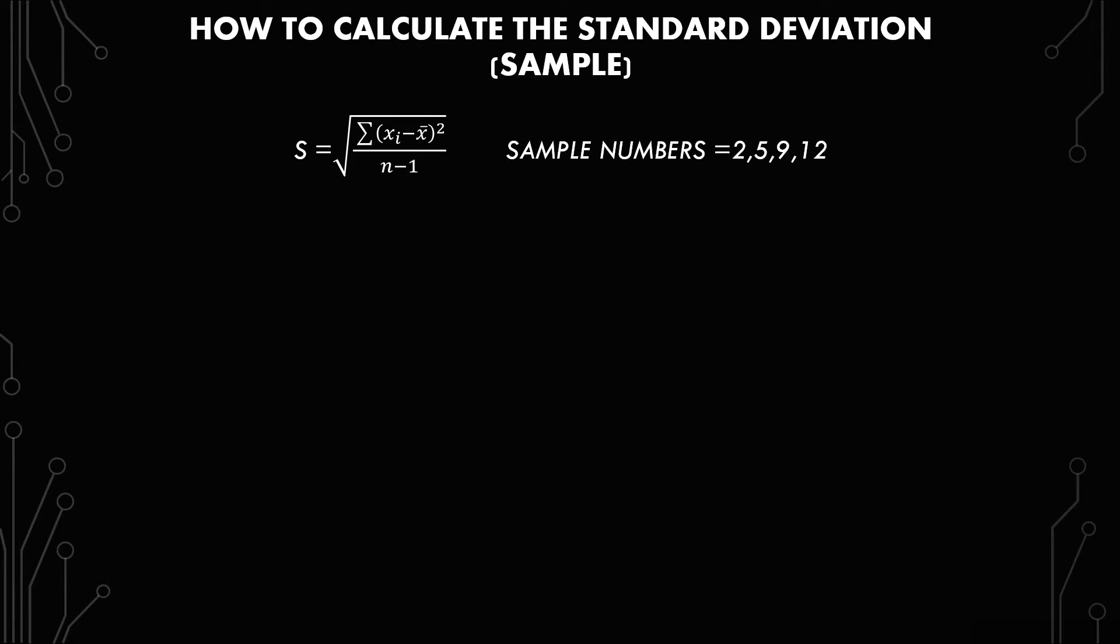In this video, we're going to go over how to calculate the standard deviation for a sample. We have the equation here, the square root of the sum of each x minus x-bar squared over n minus 1.